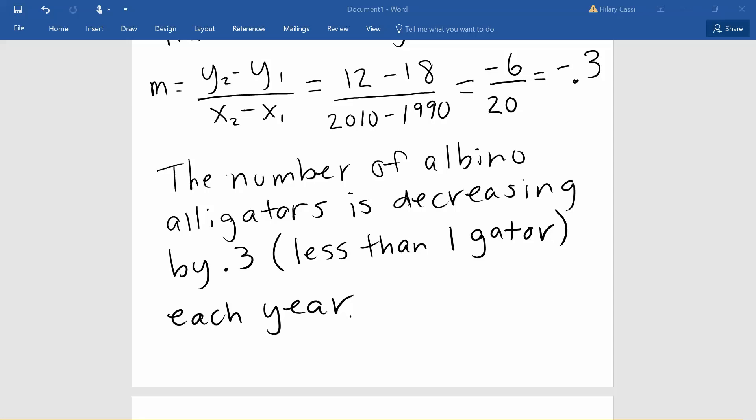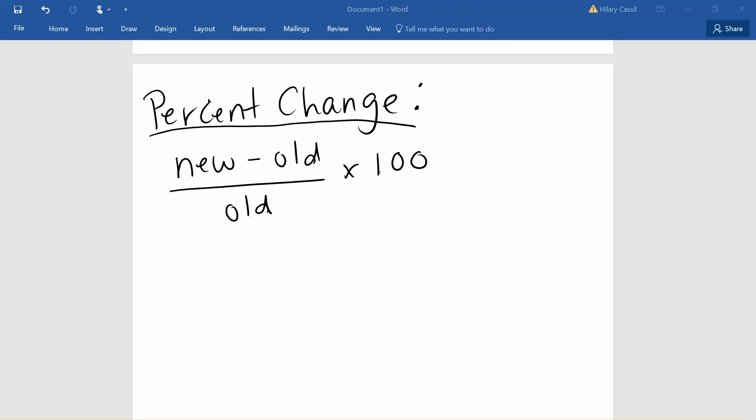We're also going to consider percent change in this situation. The way we find percent change is by finding the difference between our new and our old value and comparing it to, in other words dividing by, our old value. This is going to give us a decimal and once we multiply times 100 we will have the percent form.